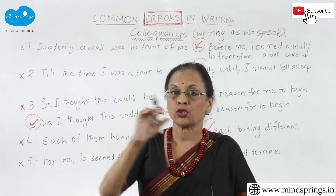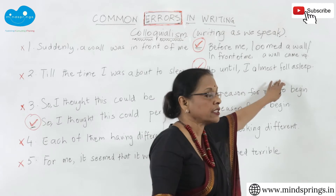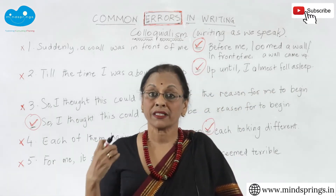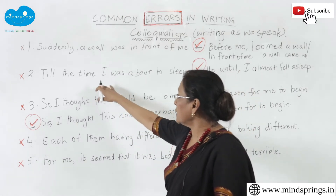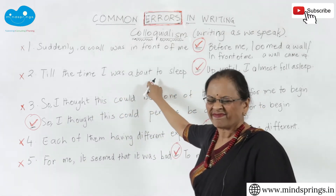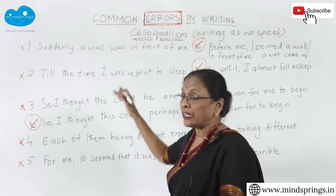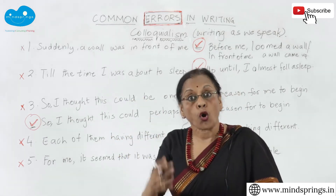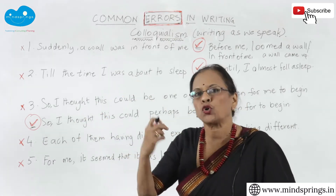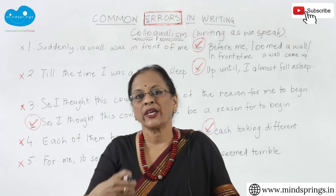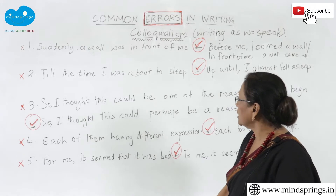Constructions like 'I was about to sleep' or 'I went to sleep' — we don't use these in good writing. 'I almost fell asleep' is much better. The problem with 'till the time I was about to sleep' is that it's all too wordy and there's too much noise. It's not grammatically completely wrong, but it's colloquial — you're saying it the way you speak. The third mistake is: 'so I thought this could be one of the reason.'